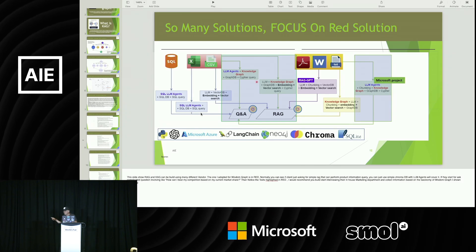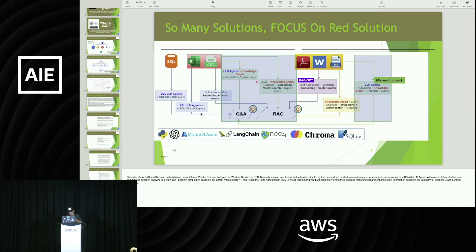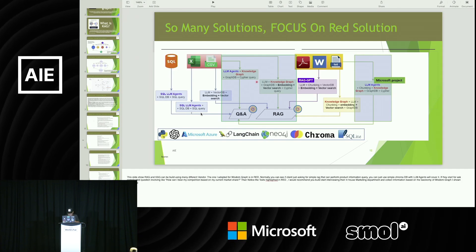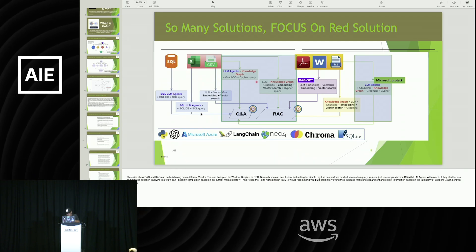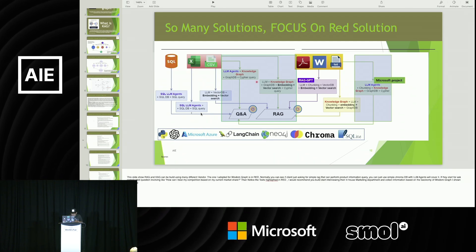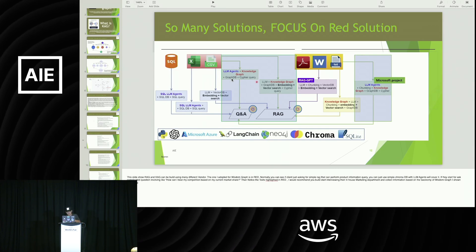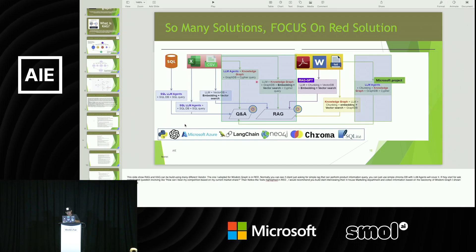There's a jungle of tools out there. You can use LangChain plus ChromaDB to build your own RAG and combine that with a knowledge graph depending on your use case. This slide shows that RAG and KAG can be built with various options. For a simple RAG that performs product information queries, you can use ChromaDB with an LLM agent. For complex questions like how to beat competition based on current market share, I'd adopt a knowledge graph with GraphDB plus Cypher queries, creating an ontology and training the RAG to perform multi-hop queries.